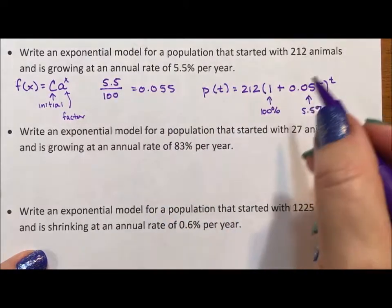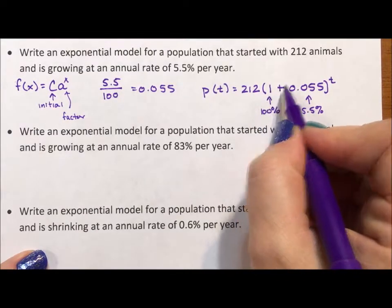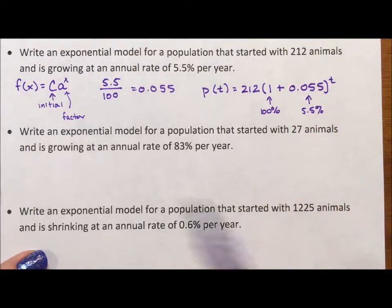So whenever you have these percent problems with growth or decay, you'll always see it starting with a 1, which is 100%, and you either grow, add to it, or decay, subtract from it. So that's our basics.